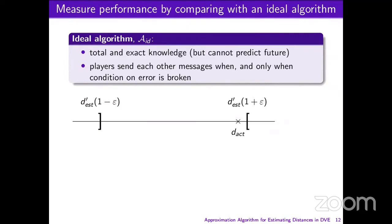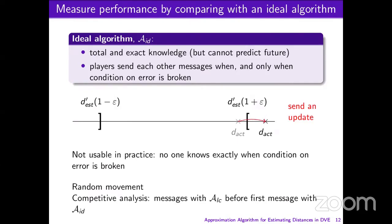In order to measure the performance, we will compare the LocalChange algorithm with an ideal algorithm. This ideal algorithm has total and exact knowledge of the states of the players but cannot predict the future, and consists in making the players send each other messages when and only when the error becomes too high. We call this algorithm ideal because it is not usable in practice, as none of the players knows the actual distance, so no one can detect when to send a message.